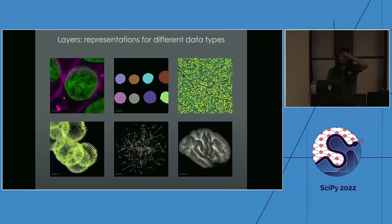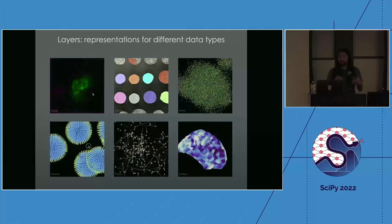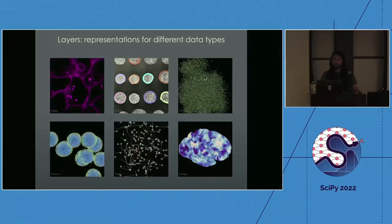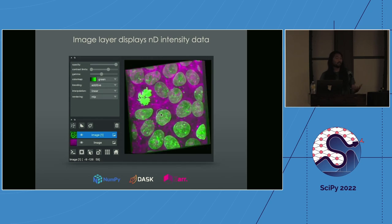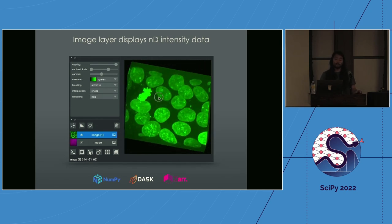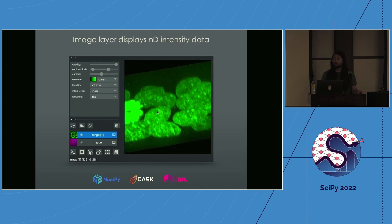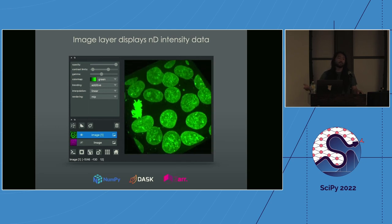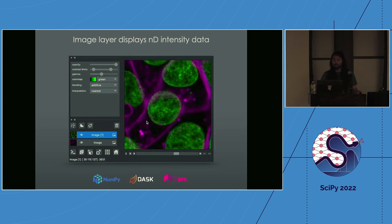We have many different layer types. The way we think of this is that layers are a particular way to visualize a set of data. Image layers are probably our most commonly used — for intensity data like satellite images or microscope images. These can be multi-dimensional: two or three spatial dimensions, plus additional dimensions representing color, time, or different positions in a well plate.